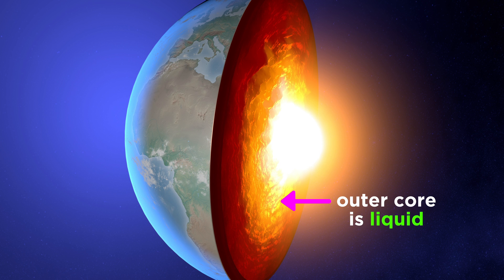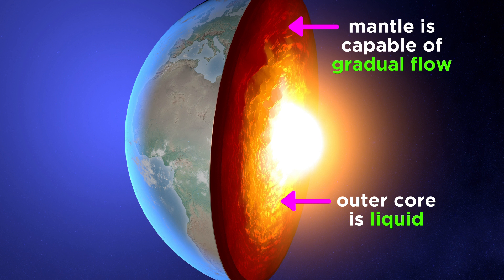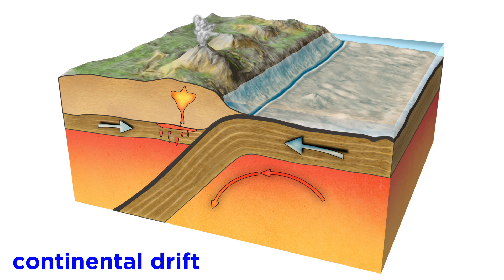Going back to the interior, as we said, the outer core is liquid, with the mantle above also capable of very gradual flow, and for this reason, sections of the crust drift over time, which is called continental drift.